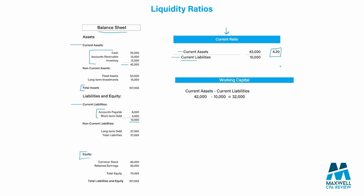Another similar formula is our working capital equation. This is simply subtracting out the current liabilities instead of dividing them. So we're taking $42,000 minus $10,000, which gives us $32,000. This tells us that after paying off our short-term liabilities, we still have $32,000 of working capital to work with over the next year.